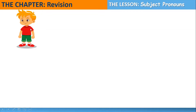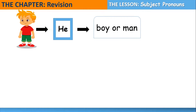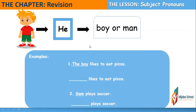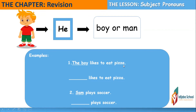Look at this picture — this is a boy. We use 'he' to replace a boy or a man. For example: 'The boy likes to eat pizza.' The boy is the subject, so I use the subject pronoun 'he' to replace the boy — 'He likes to eat pizza.' Sentence number two: 'Sam plays soccer.' Sam is a boy, so I use 'he' to replace the noun Sam — 'He plays soccer.'